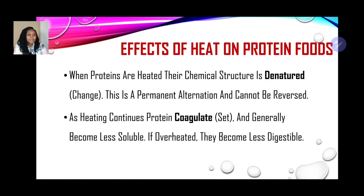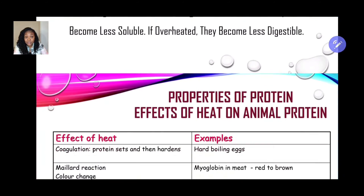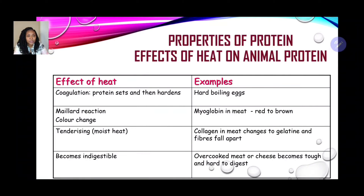Looking deeper at the effects of heat on protein foods: when proteins are heated their chemical structure is denatured — a permanent alteration that cannot be reversed. As heating continues, protein coagulates and gradually becomes less soluble. However if overheated, proteins become less digestible and syneresis takes place — moisture and liquid ooze from the food product, leaving it dry and less digestible.